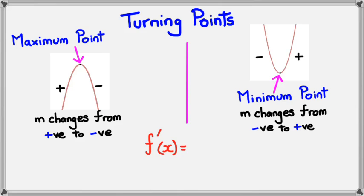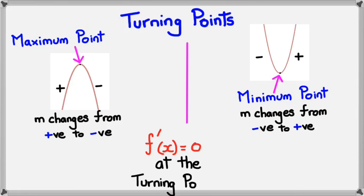One other thing you have to remember is that the gradient is equal to 0 at the turning points. That's why, when it goes from positive to negative, it has to go through 0. And when it goes through 0, it's going to be a turning point.